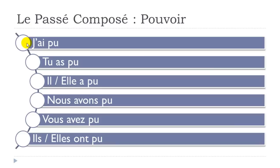So let's see them together. J'ai pu, tu as pu — remember, you don't pronounce the S here — il a pu, elle a pu, nous avons pu — little liaison between the two — nous avons pu, vous avez pu — same thing here, little liaison between the two — ils ont pu — same thing here — elles ont pu.